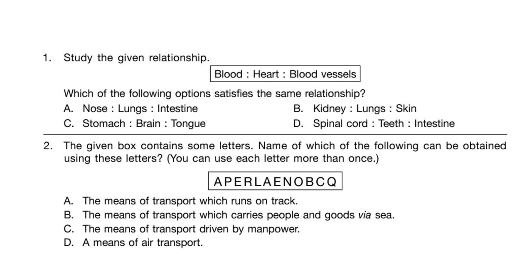Question 2: The given box contains some letters. Name which of the following can be obtained using these letters — you can use each letter more than once. Option A: a means of transport which runs on track, that can be train, but T is not given. Option B: a means of transport which carries people and goods via sea, that can be ship, but S is not given.